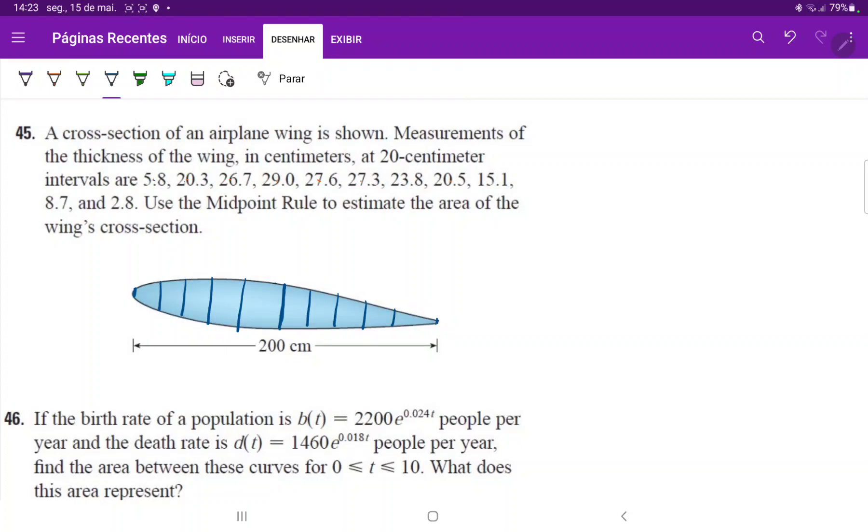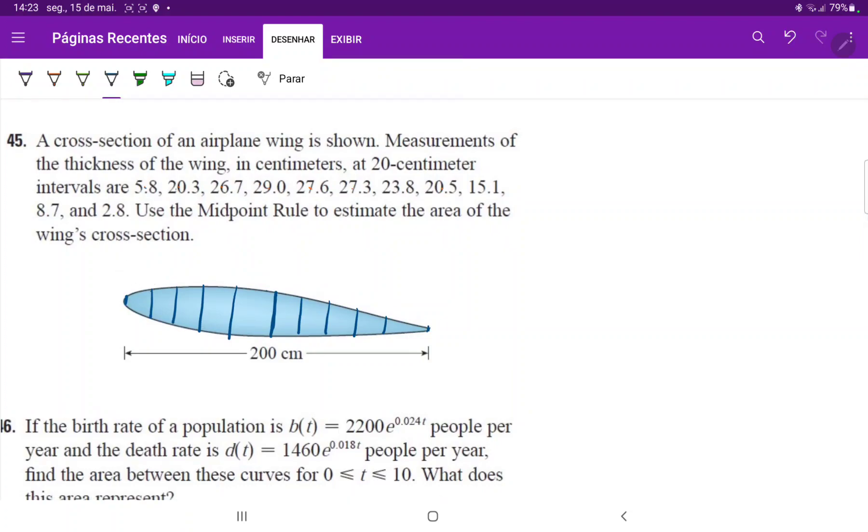So for the measurements of the endpoints, let's see, this is, and I'll have to draw this kind of smaller, this over here is 5.8 and then 20.3. Maybe I'll draw these in alternating sections. So this is 5.8, 20.3, 26.7, 29,